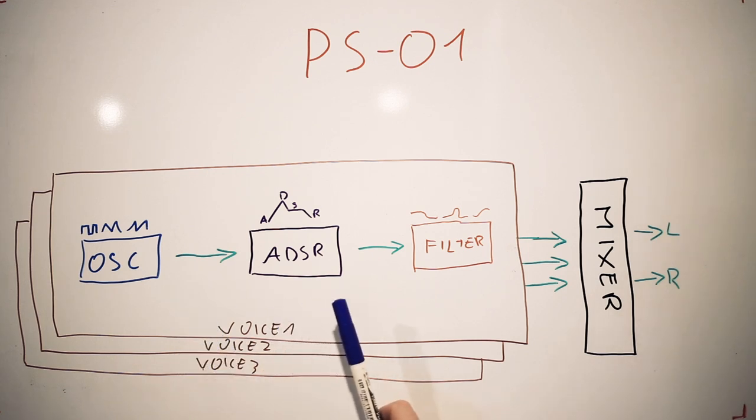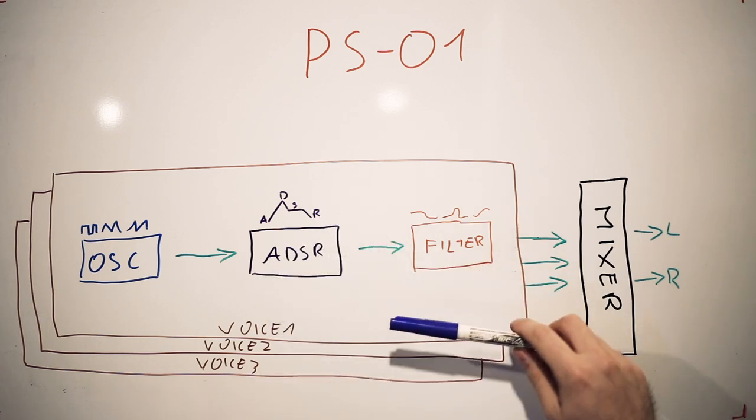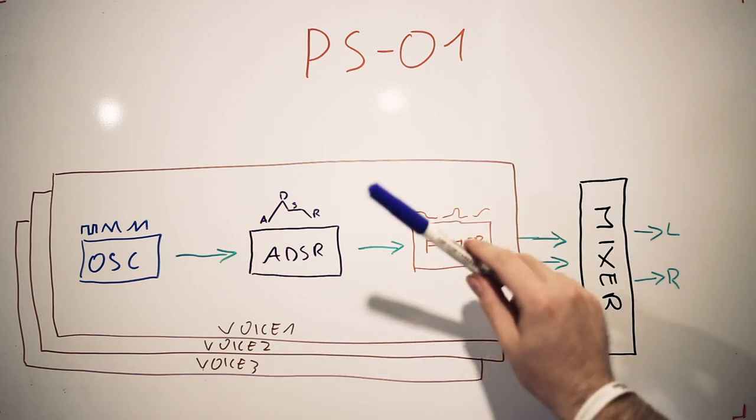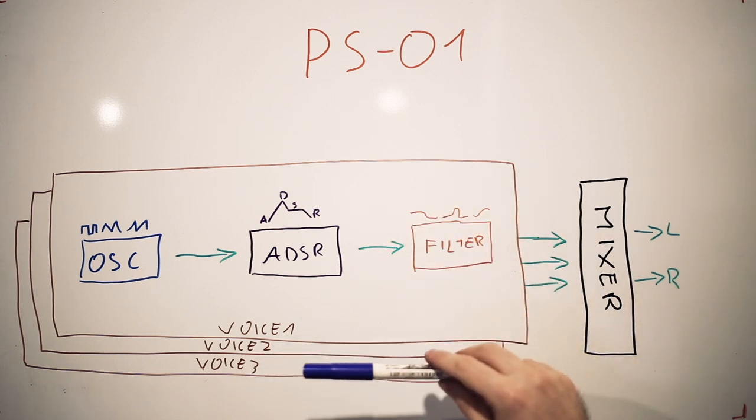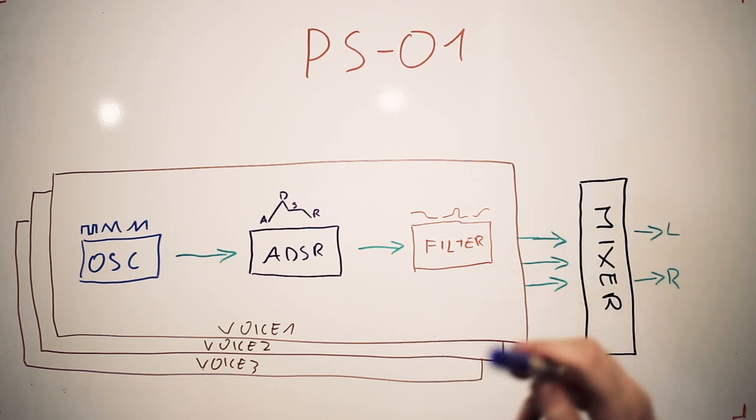Once that specific wave has been generated, it's passed to the ADSR, which is the attack, decay, sustain, release. It's basically a cycle of how the volume changes depending on the time. ADSR modifies the volume of the sample and then it goes to a filter. Similar to the SID chip, we have low pass filter, band pass filter, and high pass filter.